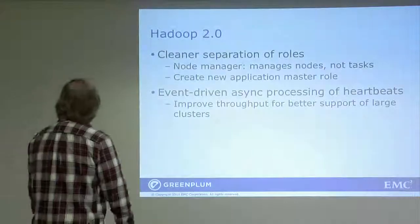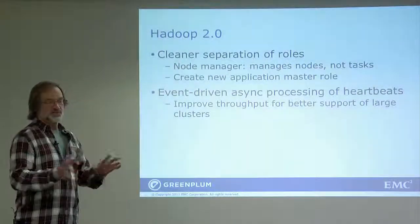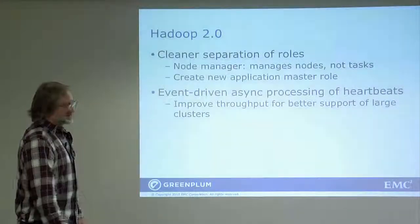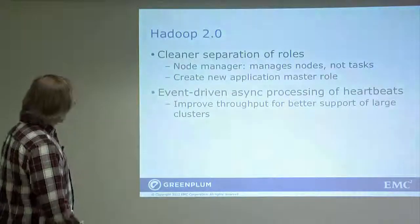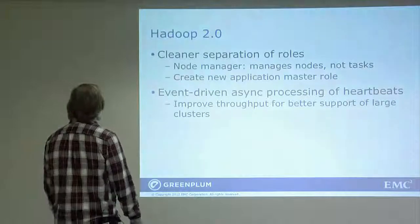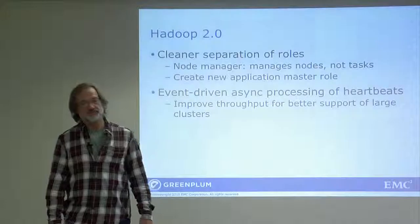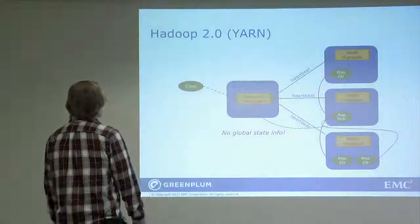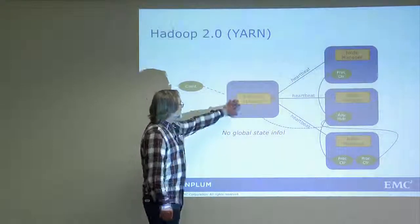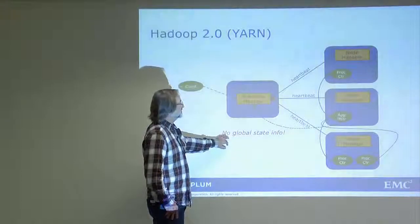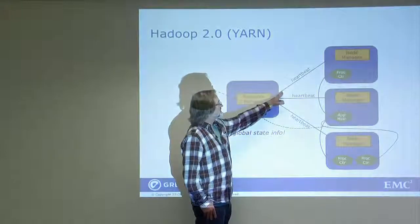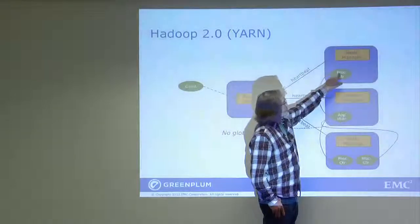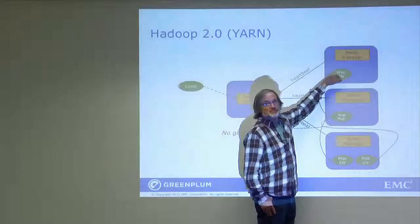In Hadoop 2.0, the job tracker and resource management system were split apart. Instead of a task tracker, there's a node manager; instead of a job tracker, there's a resource manager. One of the biggest changes was that heartbeat processing became asynchronous, improving throughput beyond the 200 beats per second limit. However, the resource manager still does not retain global state information — it still relies on data coming back in the heartbeats. And notably, the node manager no longer has a direct parent-child relationship to the process.